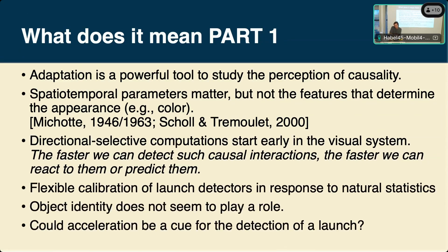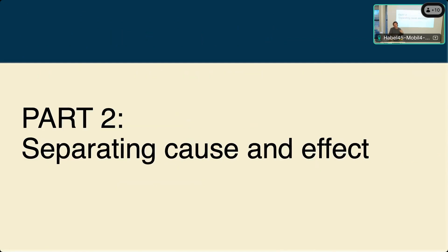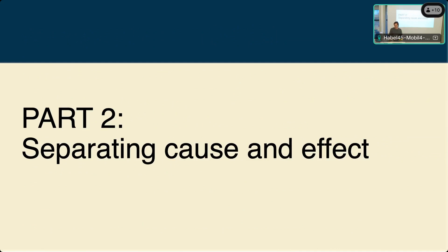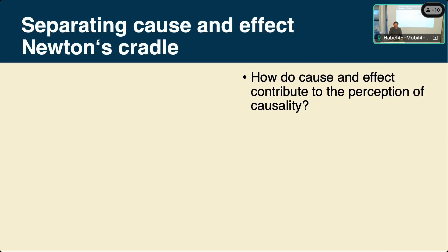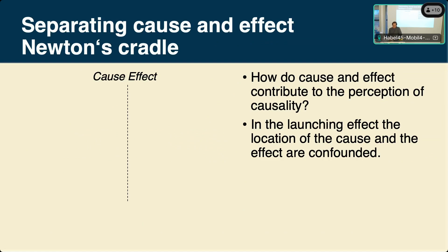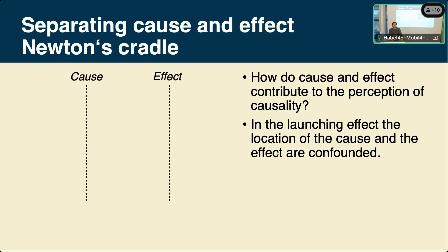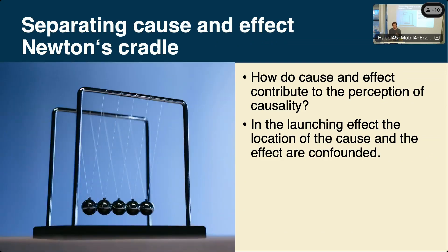In Part 2, we try to separate the cause and the effect in our stimuli, teasing apart the individual role of the launcher and the launchee in causal perception. The challenge is that in standard launching events, the location of the cause and the effect is identical — they are confounded. Our goal is to separate those locations and determine how each contributes to causal perception, which brings us to Newton's Cradle.